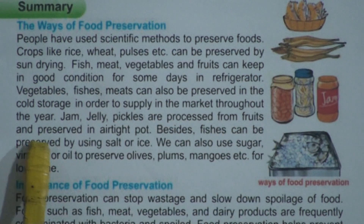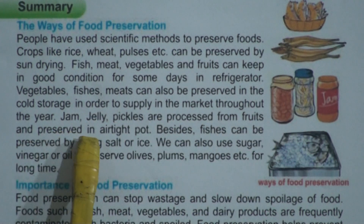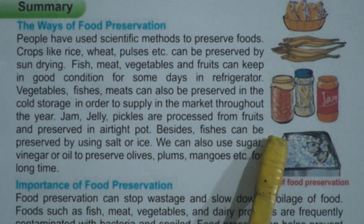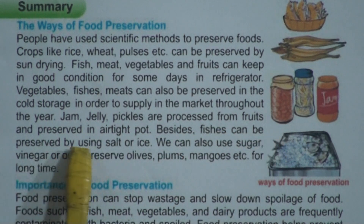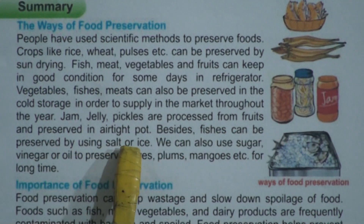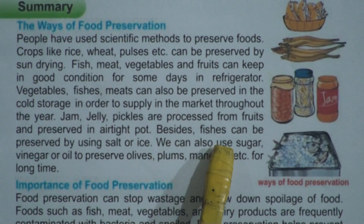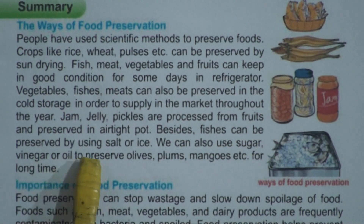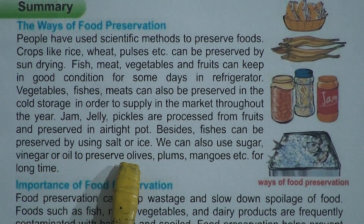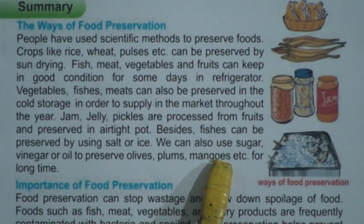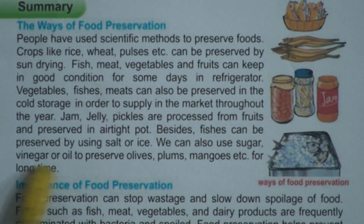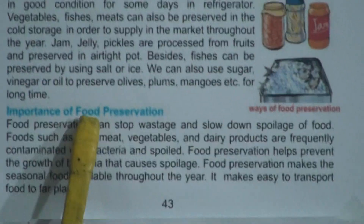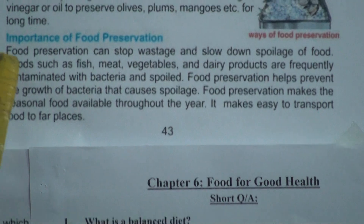Jam, jelly, and pickle are processed from fruit and preserved in airtight pots. Besides that, fish can be preserved by using salt or ice. We can also use sugar, vinegar, or oil to preserve olives, plums, mangoes, etc. for a long time.